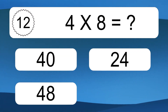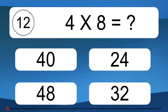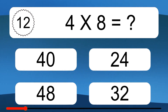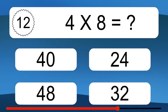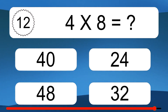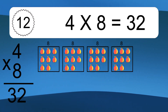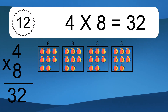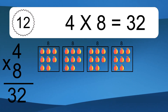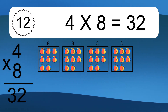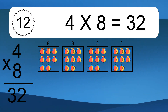4 times 8 equals what? 4 times 8 equals 32. We have 4 boxes, and each box has 8 colorful balls inside. If you count all the balls in all the boxes together, you will have 4 times 8 balls. This equals 32 balls.